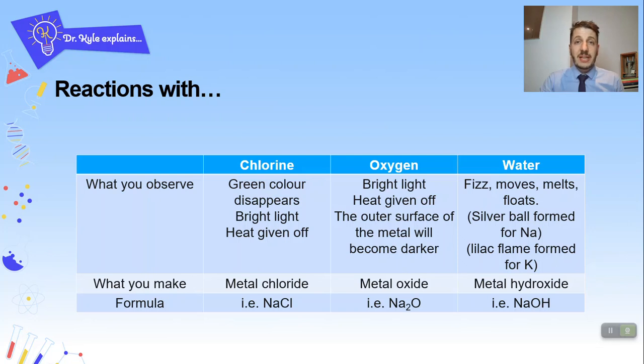Now specifically you need to know that sodium forms a silver ball and for potassium you need to know that it forms a lilac flame. What you would make would be a metal hydroxide and so if you dropped rubidium in water you would make rubidium hydroxide. In the example of sodium it would be sodium hydroxide and the formula of that would be NaOH. OH is your hydroxide, Na for sodium.